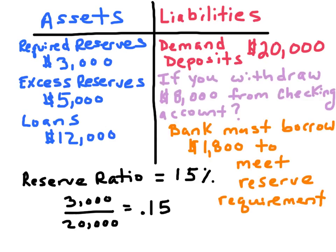Let's suppose that after you deposit your money into your bank account, you decide you need some money to go buy some stuff. So you go to the bank and withdraw $8,000 from your checking account. The bank is liable to pay you $8,000 — that's why demand deposits are liabilities. We subtract $8,000 from the $20,000 on the liability side, and the bank pays you from its excess reserves and required reserves.